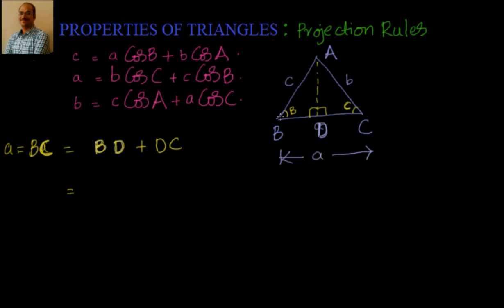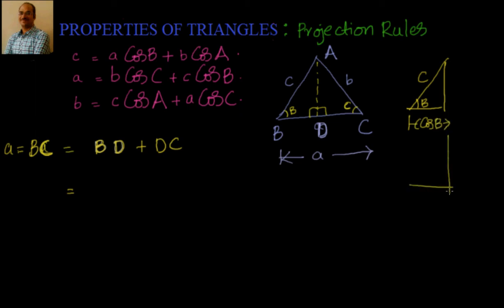If you take triangle with side c and angle B, you can see that BD is nothing but equal to c·cosB. If you take this as a separate triangle — this is c, this is angle B — then this length is nothing but c·cosB. Similarly, you take another triangle where you have angle C and hypotenuse as b.